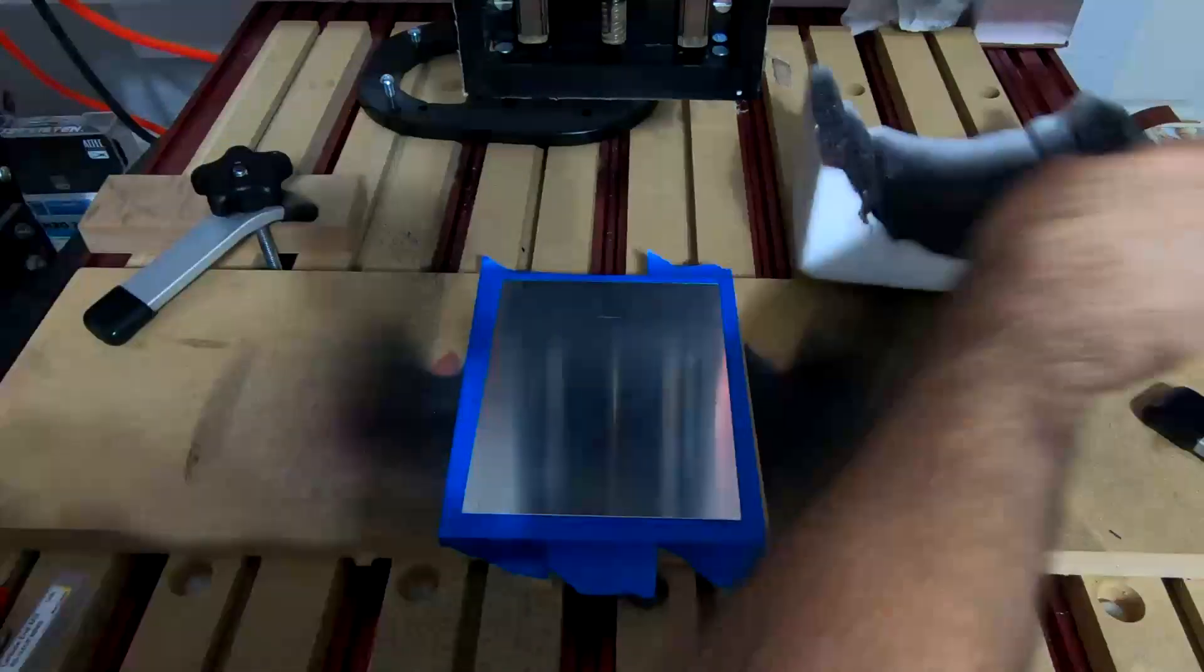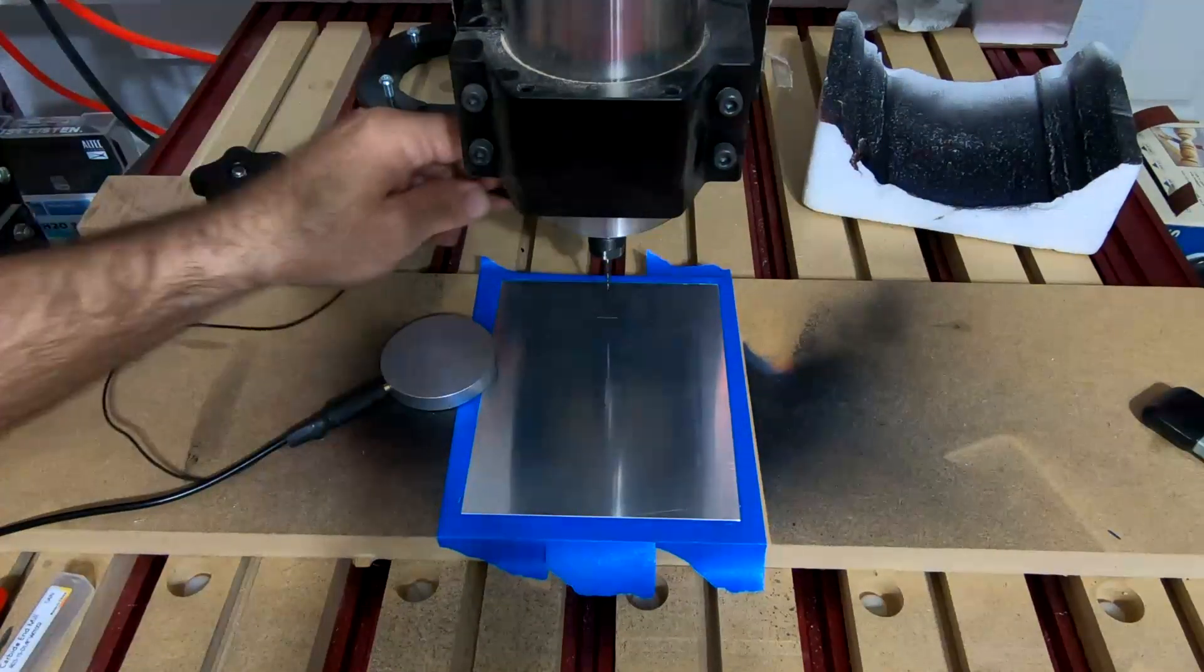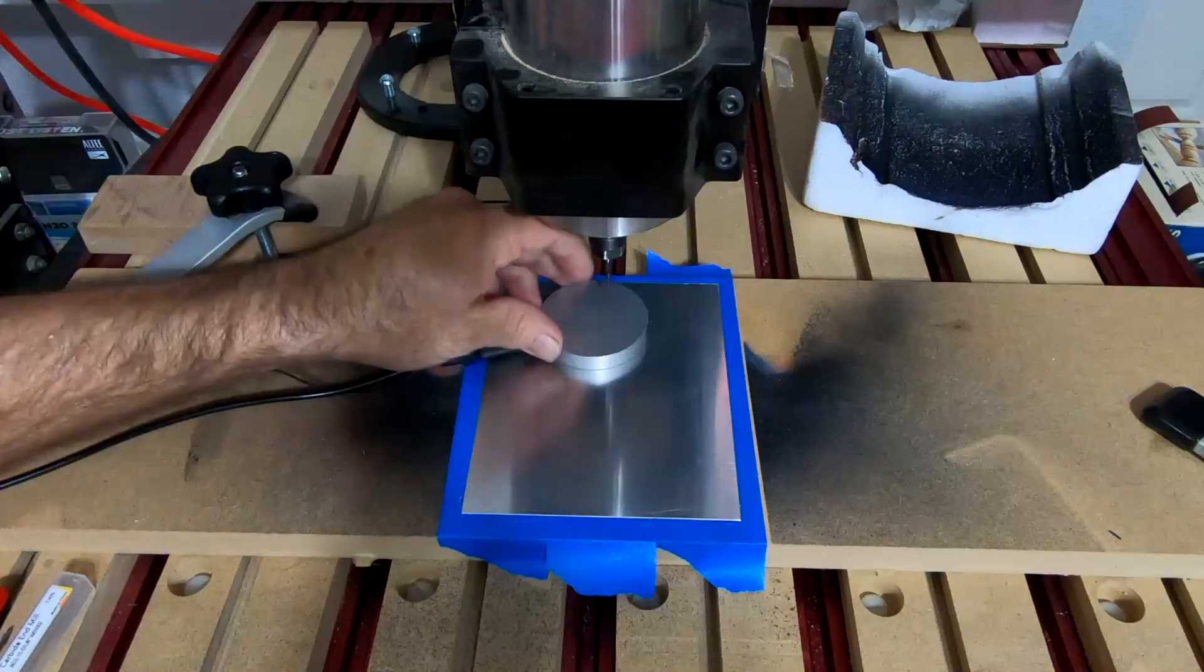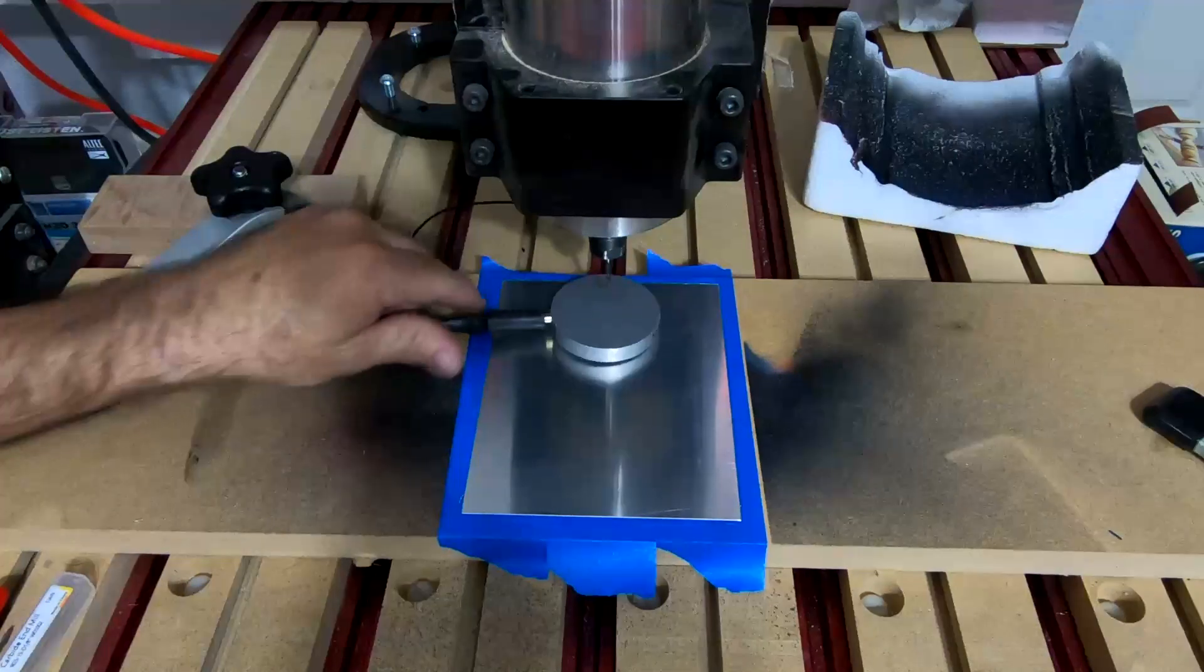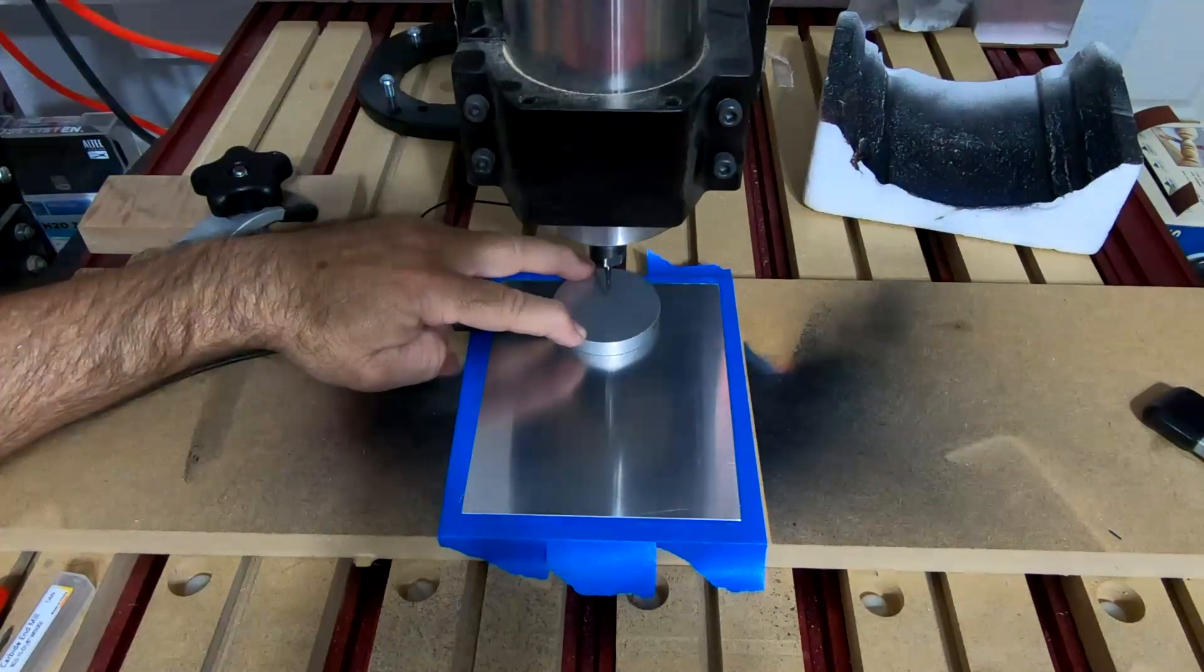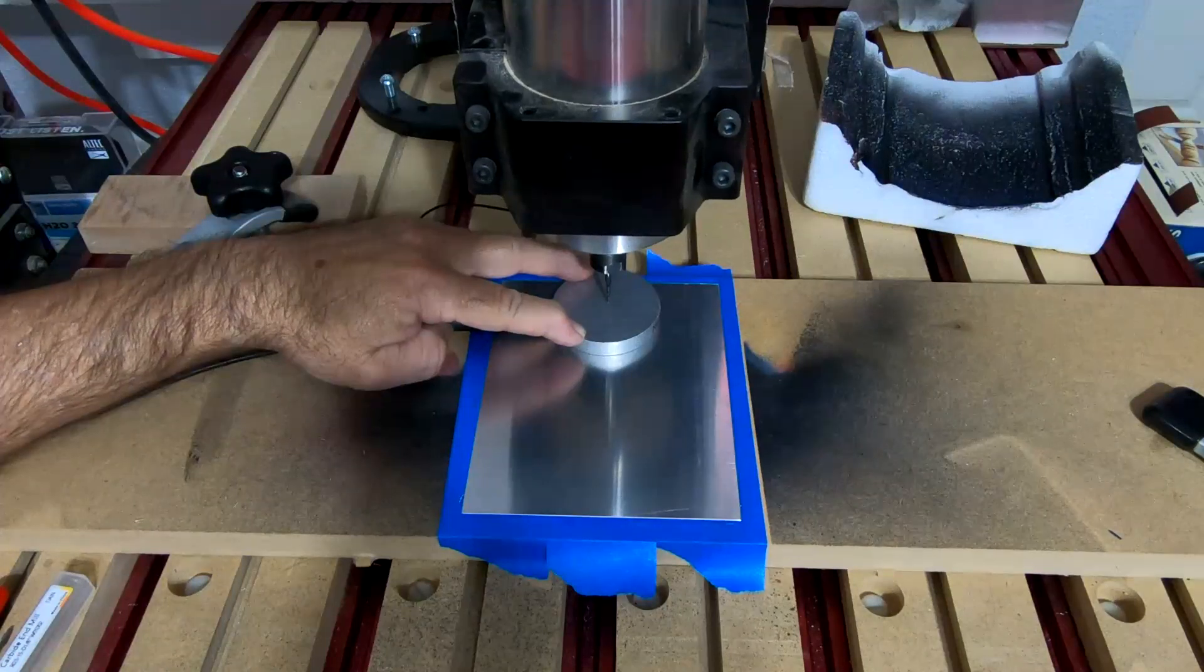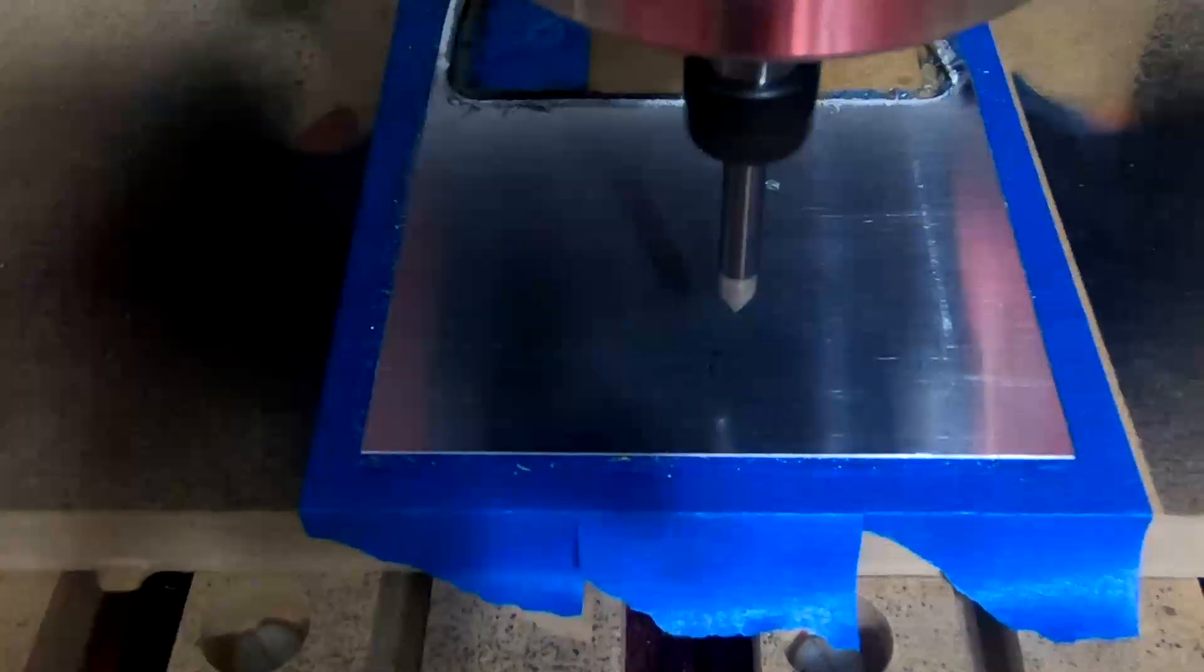Get this bit in here. You get a zeroed out for our height. These touch plates are amazing. If you don't have one, you can use the piece of paper trick. We'll have to do that on the diamond drag bit. Now we're zeroed and we can get started.